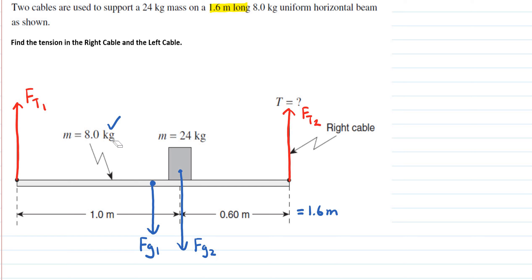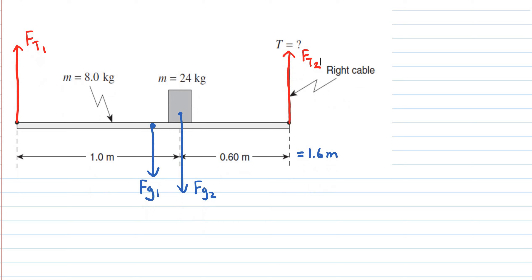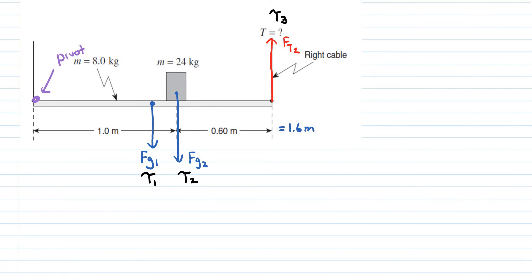Now that we've drawn the free body diagram, we apply rotational equilibrium. We calculate torques: torque one, torque two, and torque three. I'll place the pivot point at one end of the beam. Once the pivot is set there, I can eliminate the force acting on that pivot point. The two clockwise torques and one counterclockwise torque define our equilibrium expression.